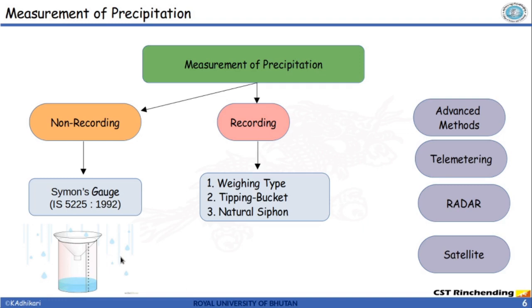Recording instruments are more advanced with internal arrangements that record rainfall at regular intervals on a chart. The chart needs to be replaced every 24 hours. The advantage of recording gauges is that data is recorded for definite time intervals — for example, data every 15 minutes is available. So we know the intensity of rainfall throughout the 24 hours. There are three types of recording gauges: weighing bucket, tipping bucket, and natural siphon.